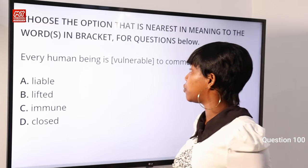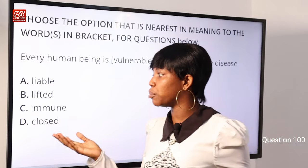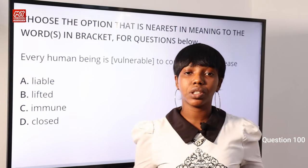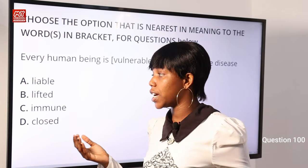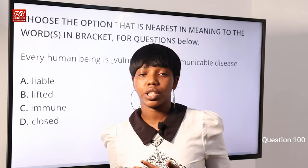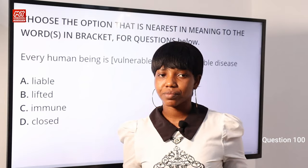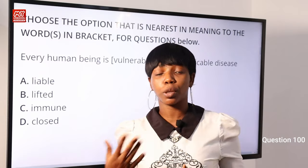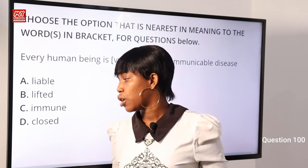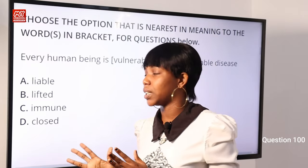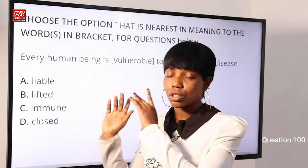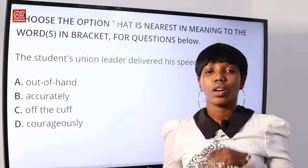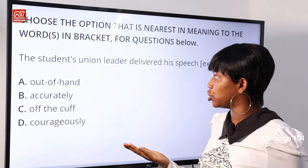Question 100: Choose the option nearest in meaning to the word in brackets. 'Every human being is vulnerable to communicable disease.' Options: A) liable, B) lifted, C) immune, D) closed. 'Vulnerable' means exposed to danger. Option A) liable also means exposed to danger. Option B) lifted means to be raised — doesn't fit. Option C) immune means not subjected to something. Option D) closed is not applicable. Option A) liable is the nearest in meaning to vulnerable.